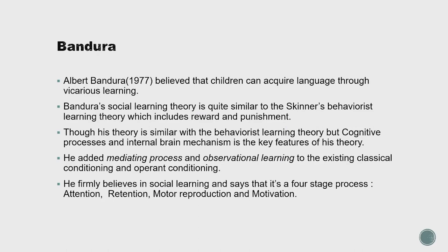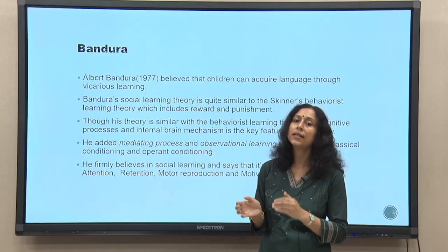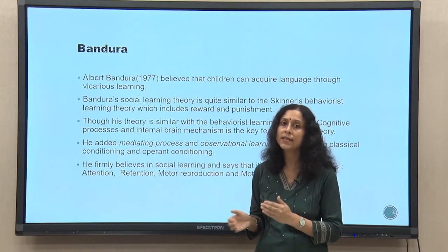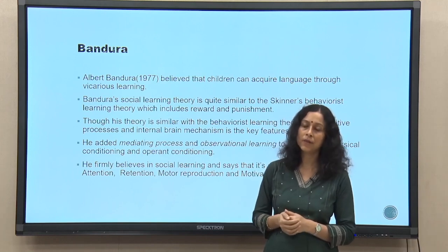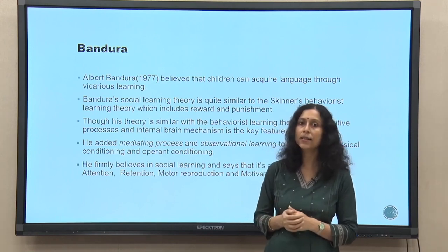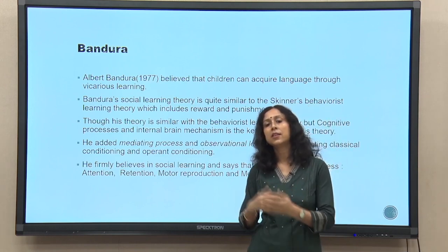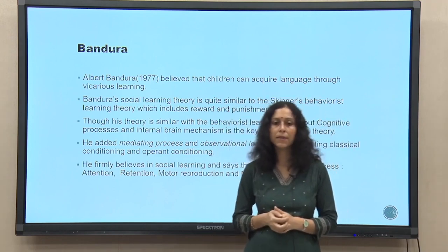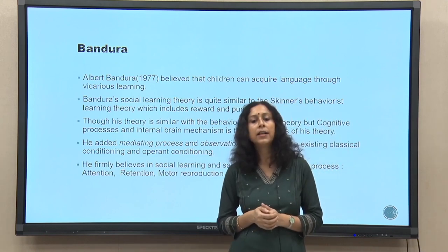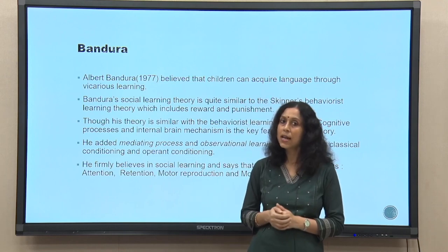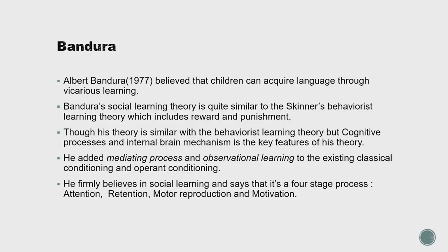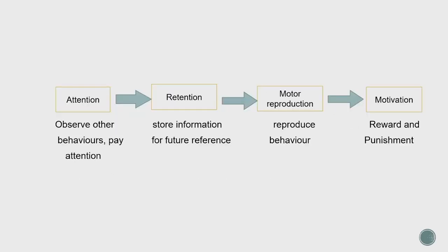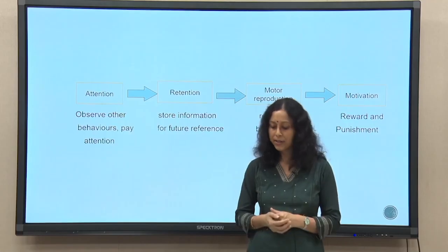Basically there is mediation and observational learning, which means that the learner is given some autonomy — and this is an important difference between him and Skinner. Skinner does not give any autonomy to the learner; it is entirely governed by the teaching method. Bandura firmly believes that social learning is very important and describes it as a four-stage process: attention, retention, motor reproduction, and motivation.